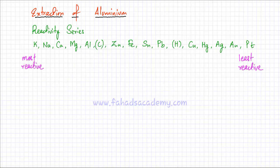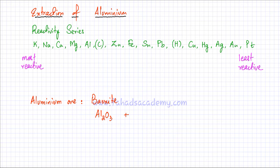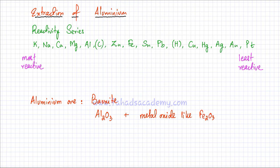In this lecture we're going to study the extraction of aluminium. Aluminium is a metal studied in the reactivity series. Aluminium ore is known as bauxite, and bauxite is mostly aluminium oxide, but there are a lot of impurities mixed with it. Most of these impurities are metal oxides like iron oxide, Fe2O3.